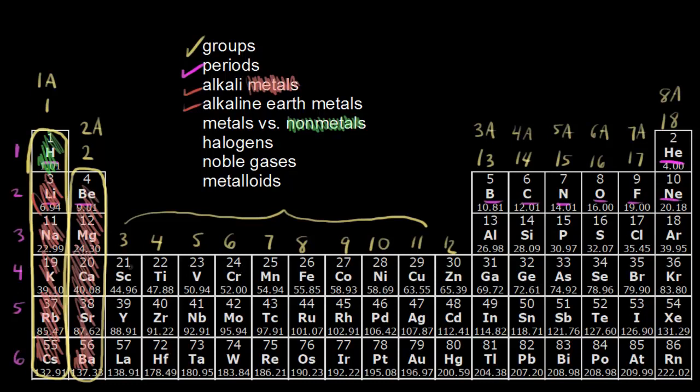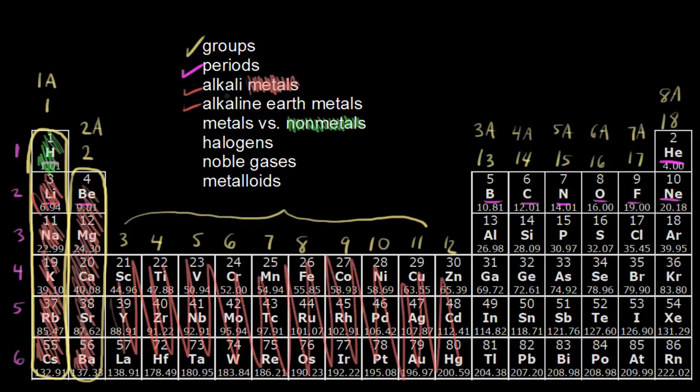So for right now, let's just go ahead and say groups 3 through 12, these are all metals in here. And let's just talk about metals in general for a minute. So metals, the properties of metals. So metals are solids at room temperature, except for mercury. So here is mercury down here, which is a liquid at room temperature.